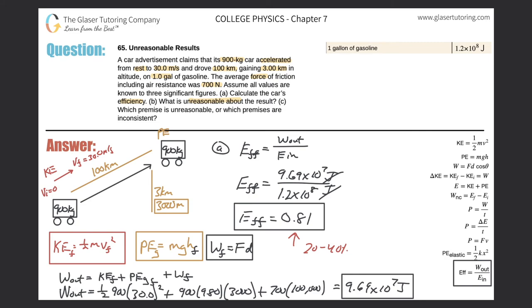So that would be the unreasonable result. Then letter C, which premise is unreasonable? Well, either there's no way that they consumed only one gallon of gasoline traveling 100 kilometers or increasing their altitude by three kilometers. One of them is wrong. It's reasonable to go from zero to 30 meters per second, but either the distance, total distance calculated was incorrect, or the altitude was incorrect.